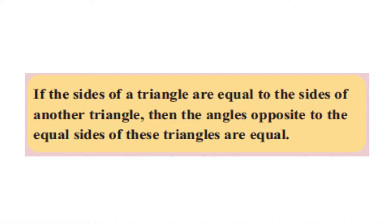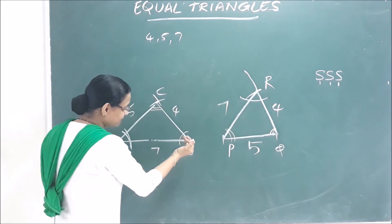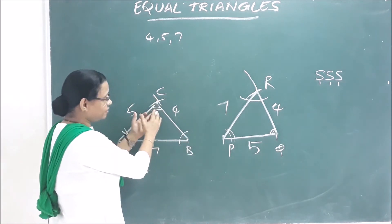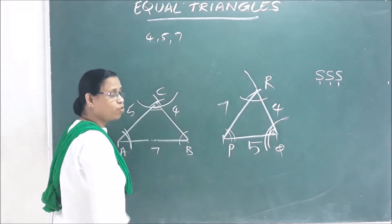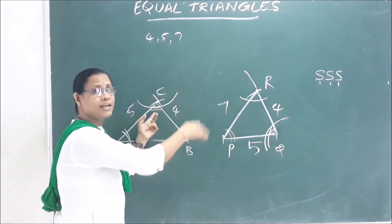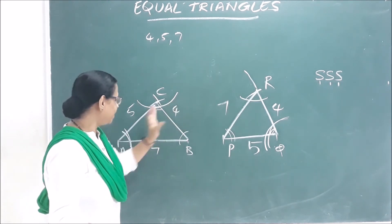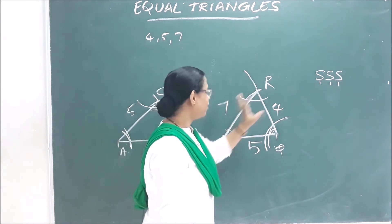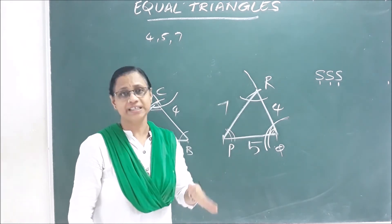If the two sides of a triangle are equal, then the angles opposite to those equal sides are also equal. That is why these two triangles are equal. If the sides of this triangle are equal to the sides of another triangle, it is congruent. The angles of all the sides are equal.